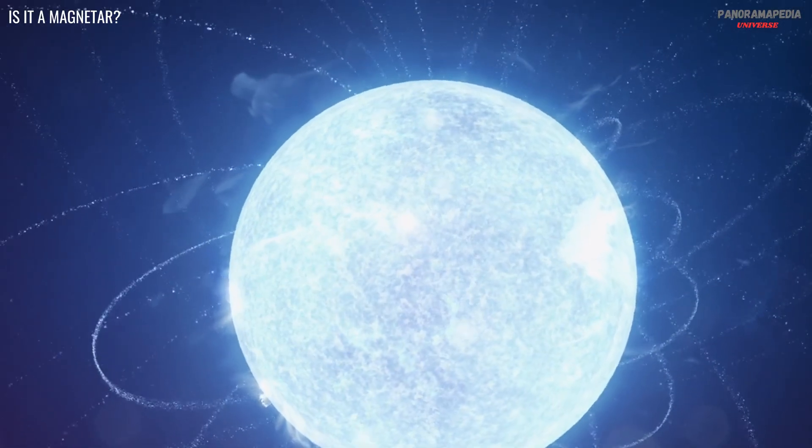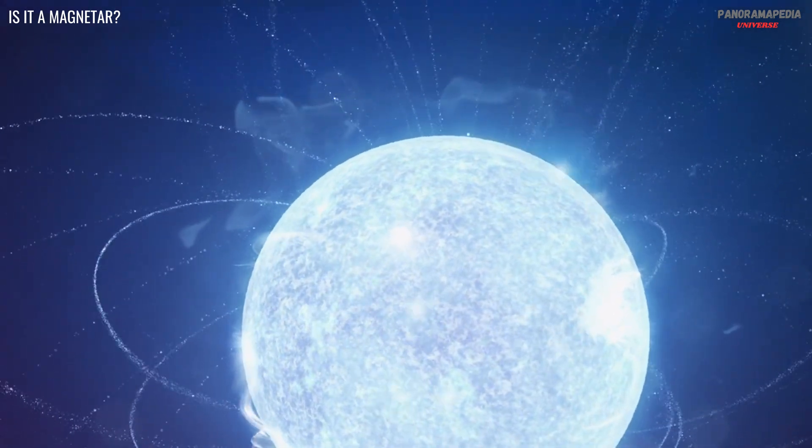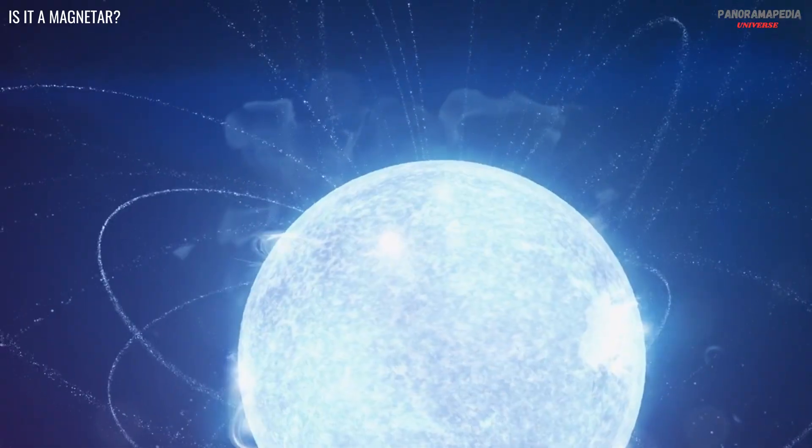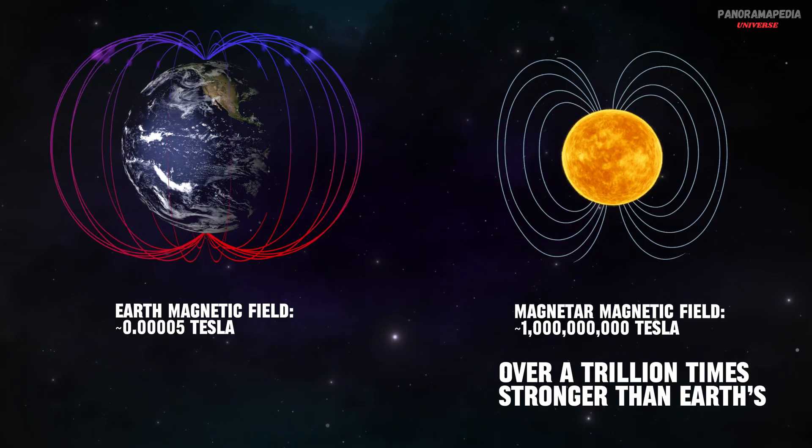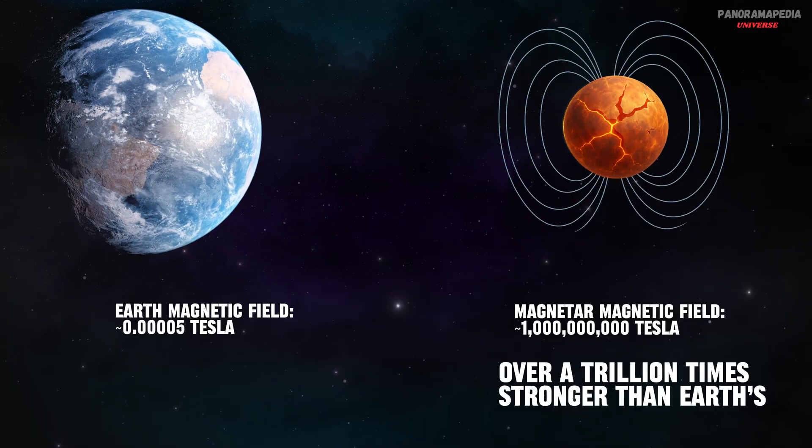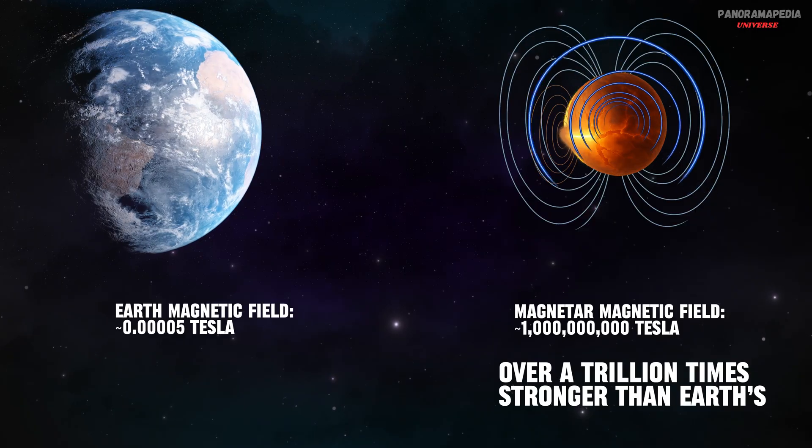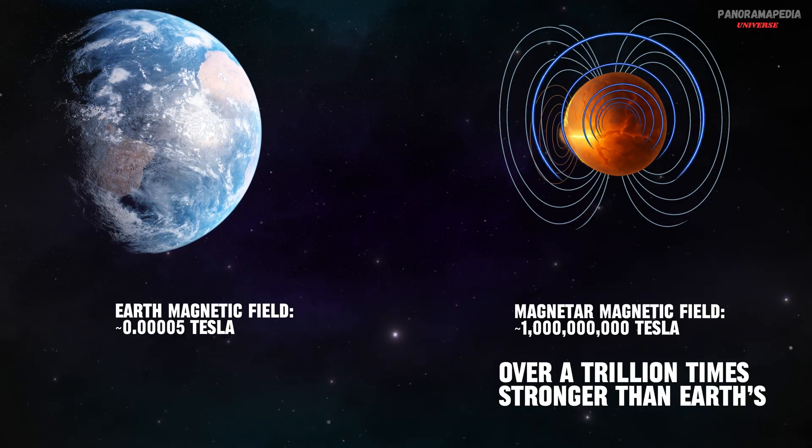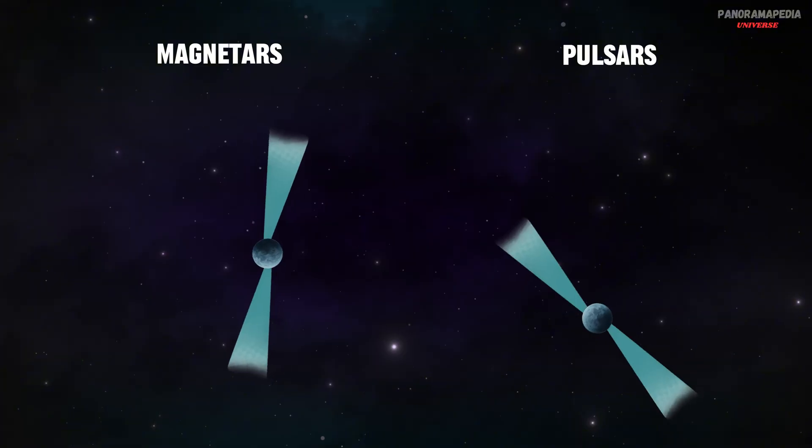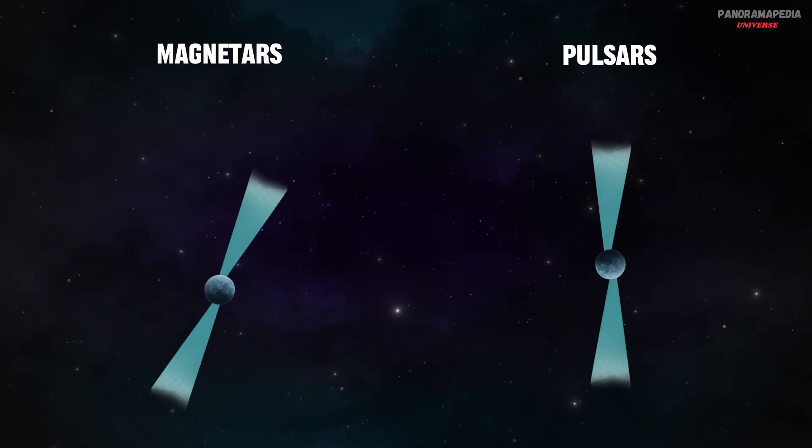Third guess: is it a magnetar? Magnetars are neutron stars too, but far rarer and more intense. They have magnetic fields a trillion times stronger than Earth's. When their crust cracks or shifts, they emit powerful X-rays or gamma rays, and sometimes radio waves. Magnetars rotate more slowly than pulsars, but even then most spin every 2 to 12 seconds.